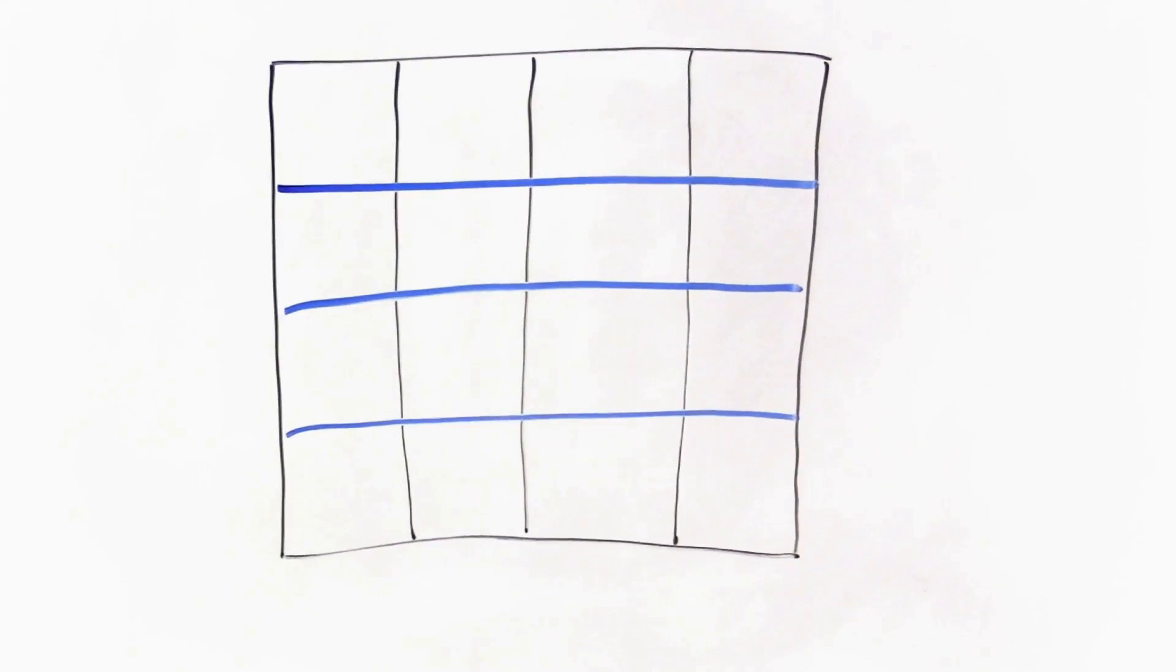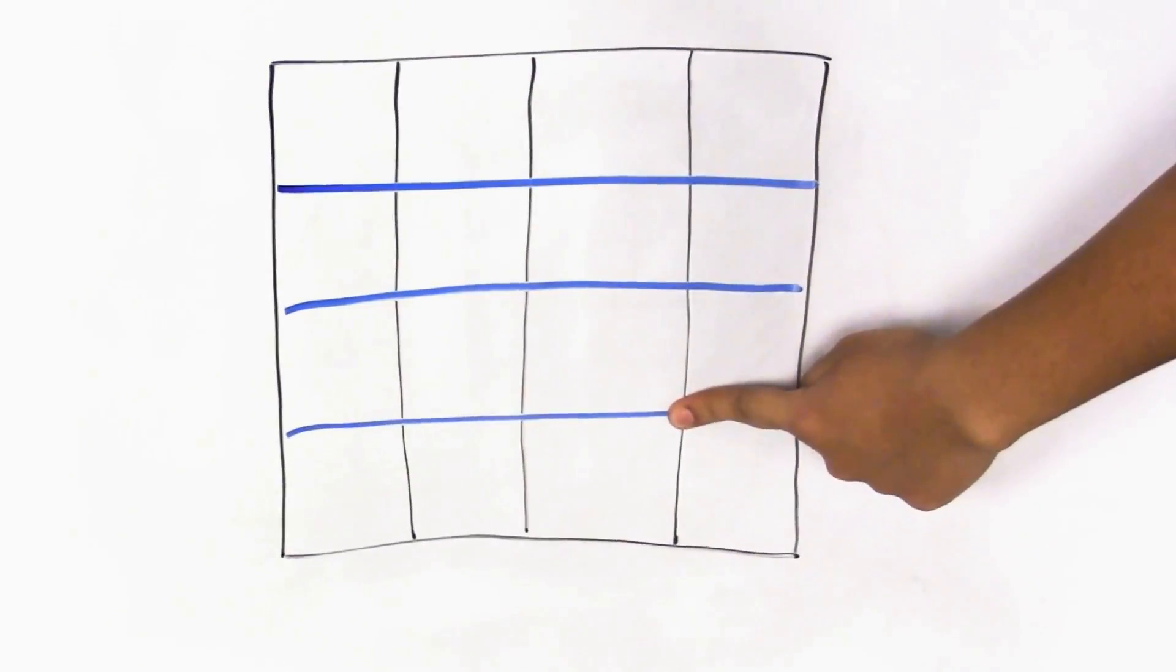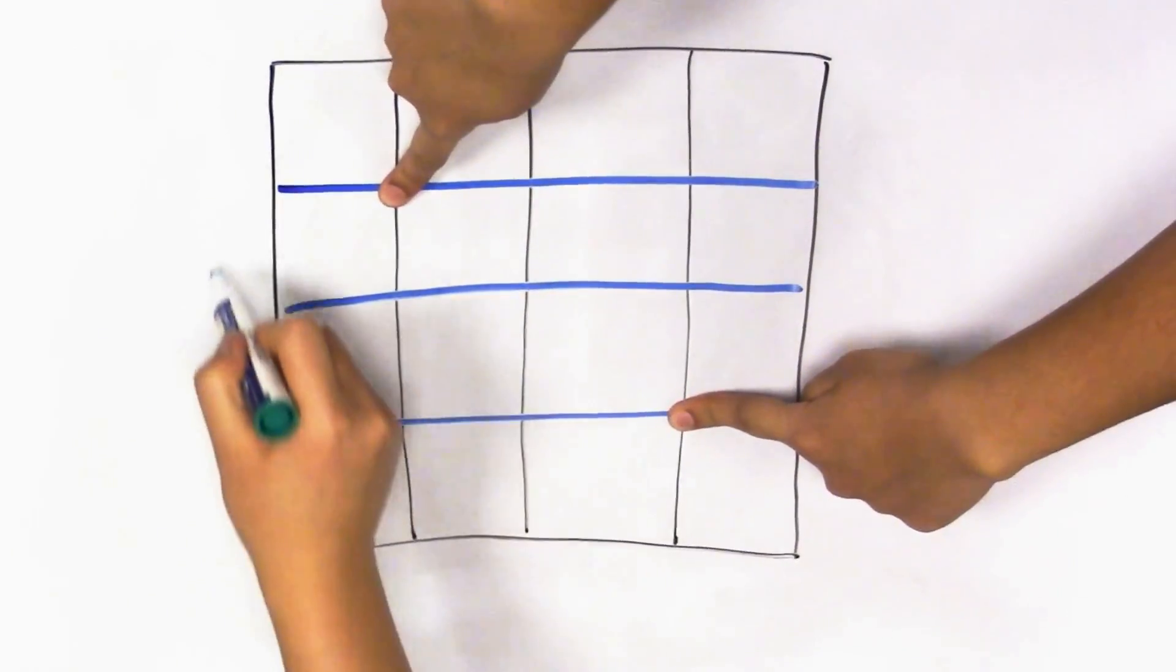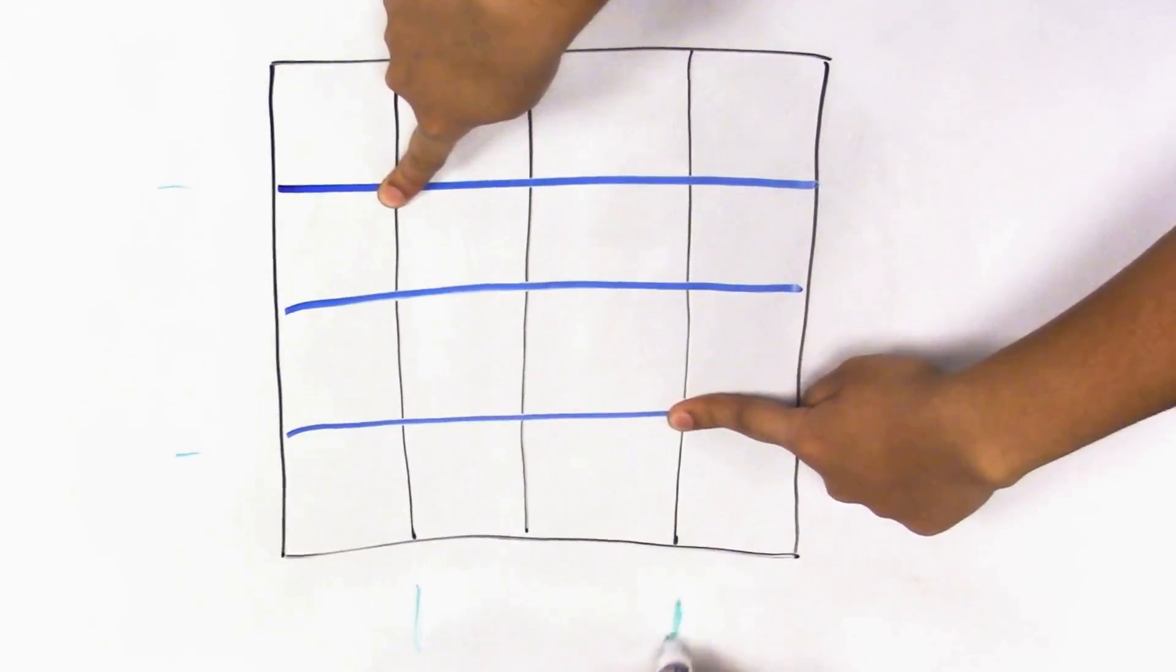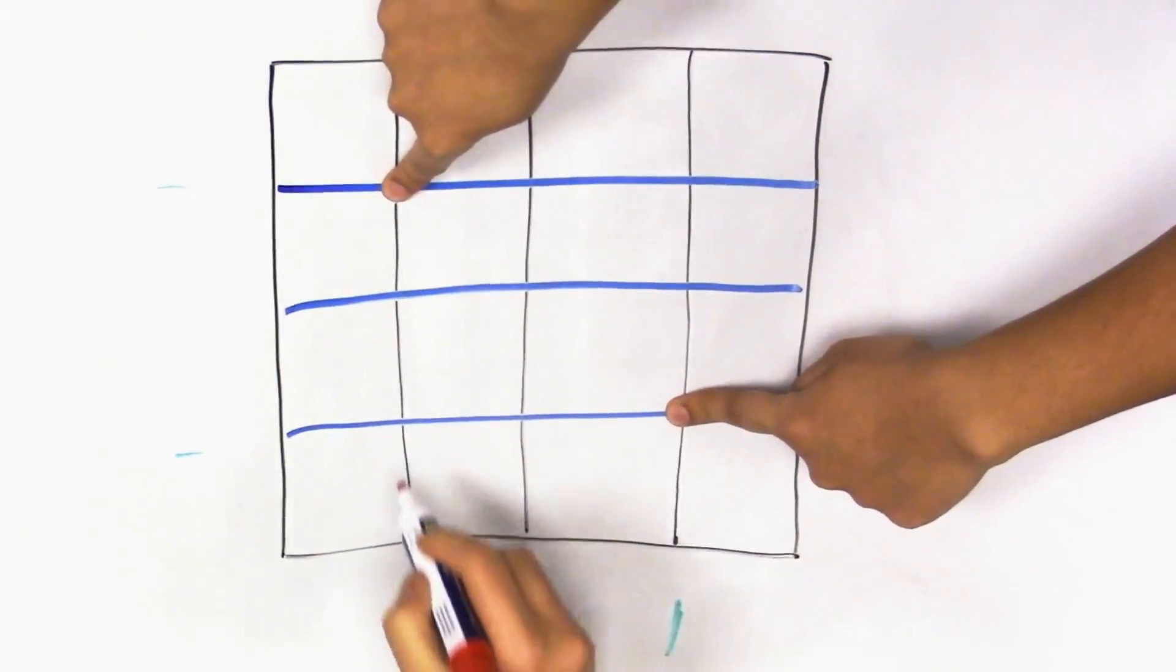This specific type of touchscreen is called a self-capacitive touchscreen. It can only accurately detect one touch at a time. When you touch it with two fingers, the controller knows the rows and columns that have been touched, but it can't tell whether the contact points are here or here.